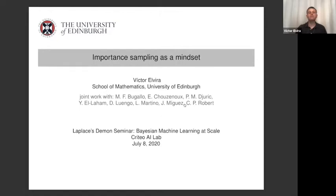In Monte Carlo methods there are mainly two families. First, MCMC methods where you build a Markov chain with the posterior distribution as stationary distribution. Today we talk about the second family: importance sampling, which is an alternative to MCMC. More precisely, π̃ is the posterior distribution of the unknowns given the data — likelihood times prior divided by the normalizing constant or marginal likelihood. π̃ integrates to z, and π integrates to one. Usually z is unknown.